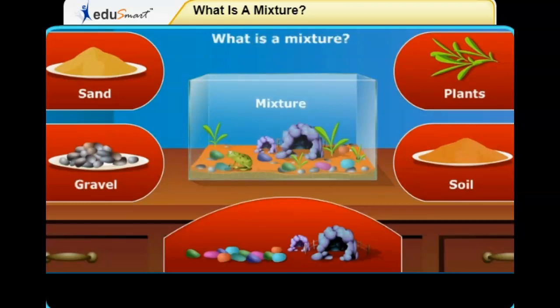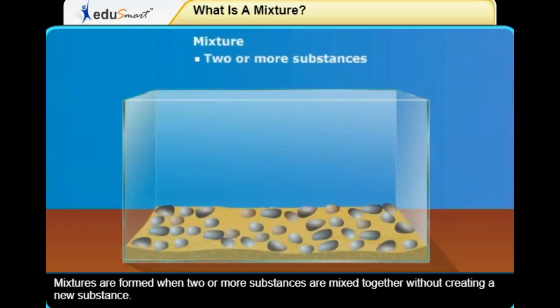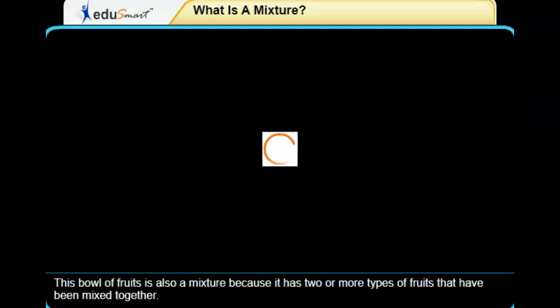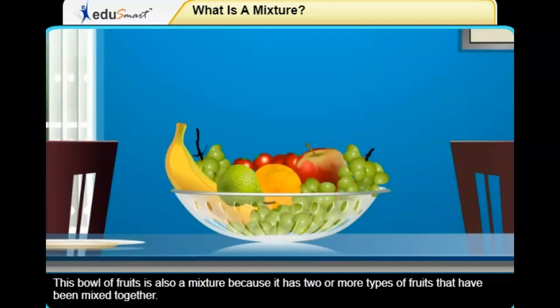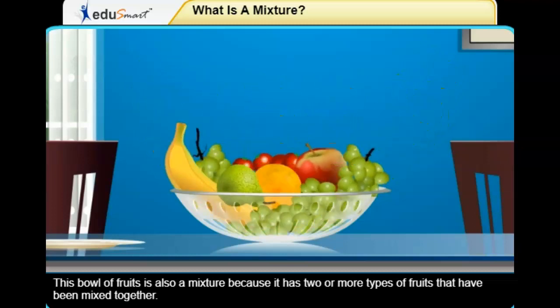What is a mixture? Mixtures are formed when two or more substances are mixed together without creating a new substance. This bowl of fruits is also a mixture because it has two or more types of fruits that have been mixed together.